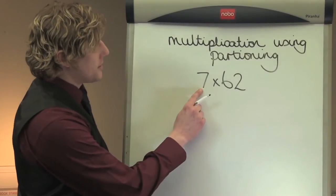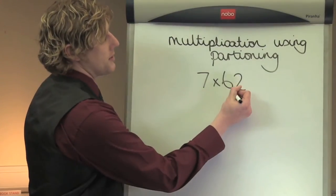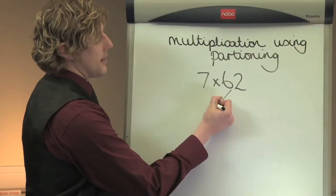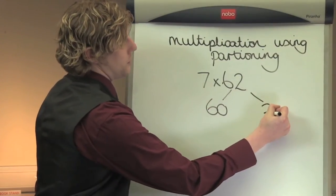So we're going to be looking at the sum 7 multiplied by 62 and I want to partition the larger number, 62, into 6 tens, which is 60, and 2 units, 2.